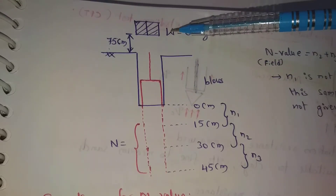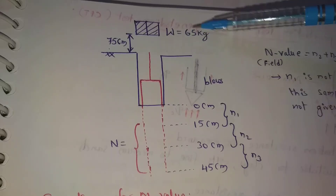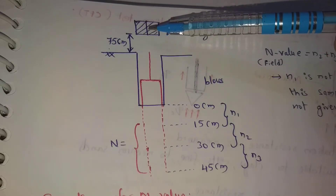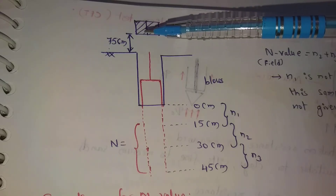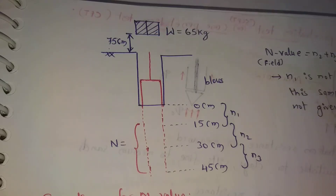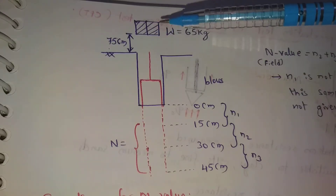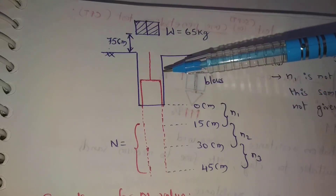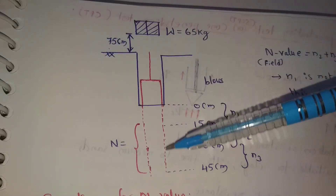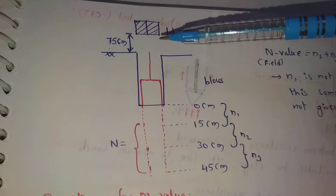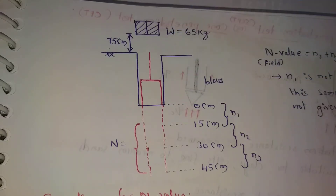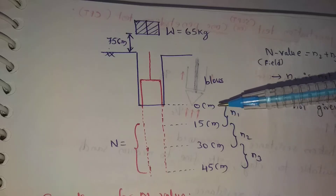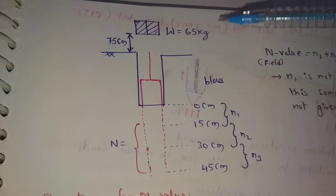In the SPT procedure, the weight of the hammer is 65 kg, and the height of drop is 75 cm. We apply blows to the sample. We record the N value for every 15 cm increment of penetration.